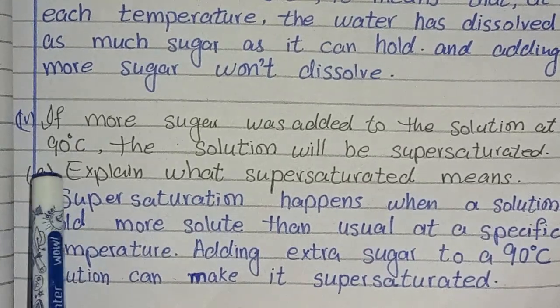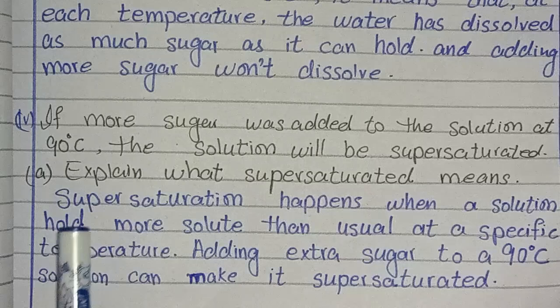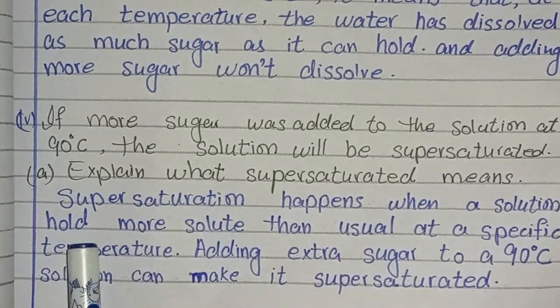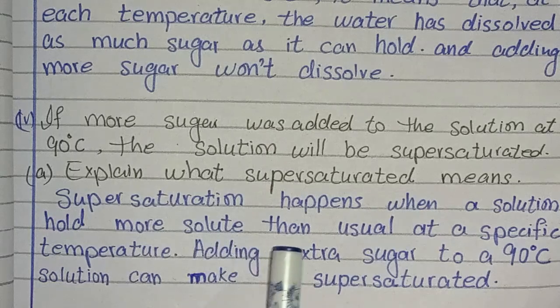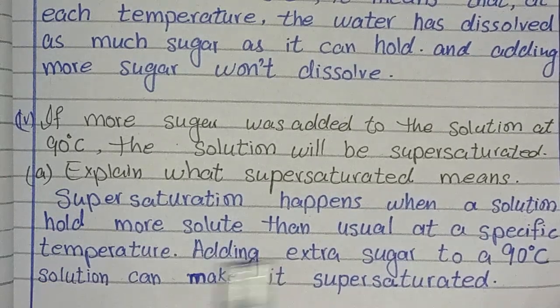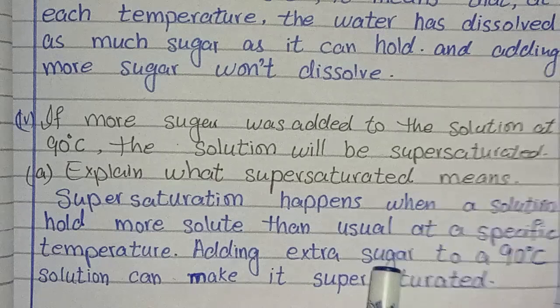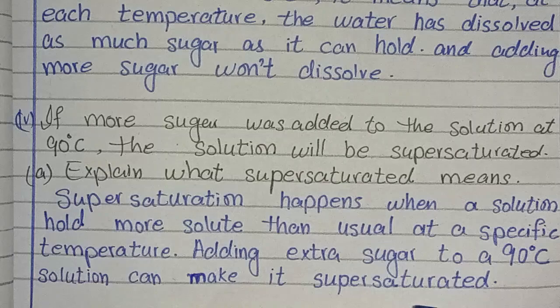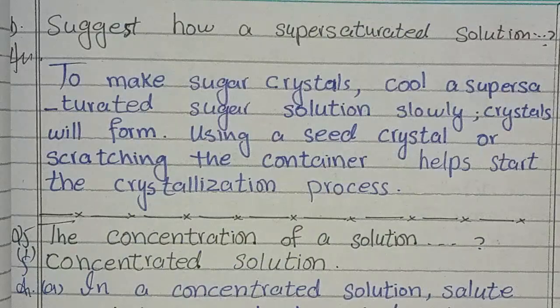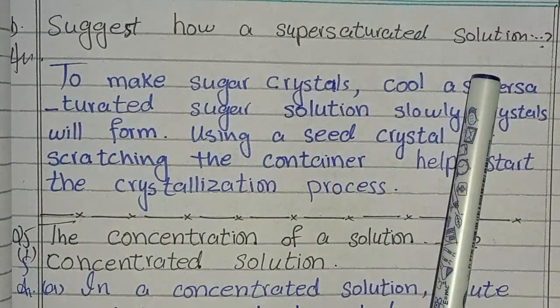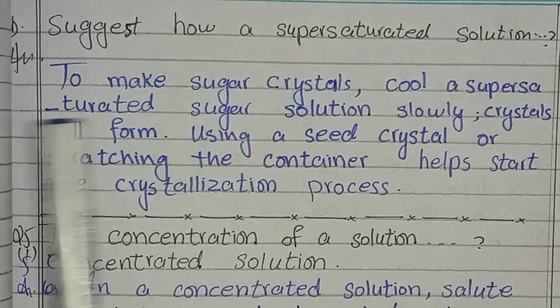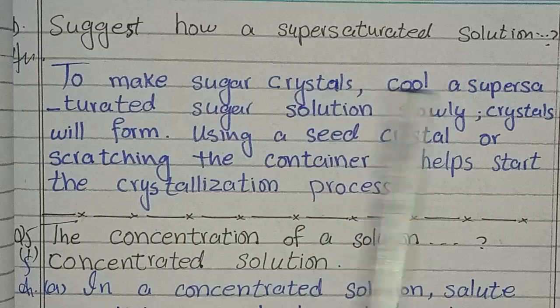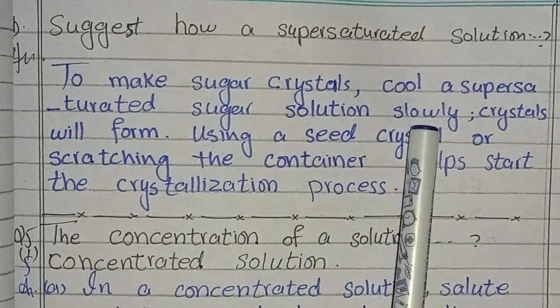If more sugar was added to the solution at 90 degrees, the solution will be supersaturated. Part A: explain what supersaturated means. Supersaturation happens when a solution holds more solute than usual at a specific temperature. Adding extra sugar to a 90 degree solution can make it supersaturated. Part B: Suggest how a supersaturated solution can be used to make sugar crystals. To make sugar crystals, cool a supersaturated sugar solution. Slowly crystals will form using a seed crystal or scratching the container helps start the crystallization process.